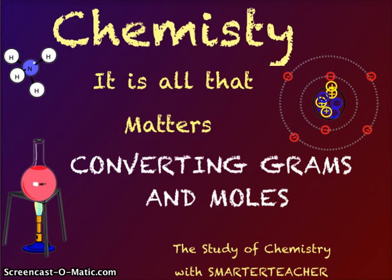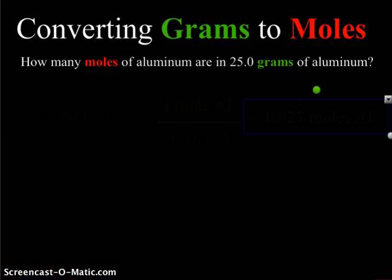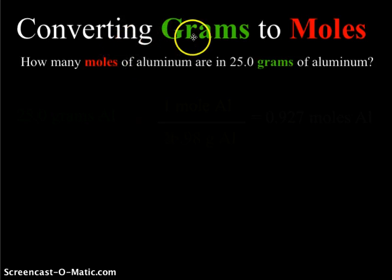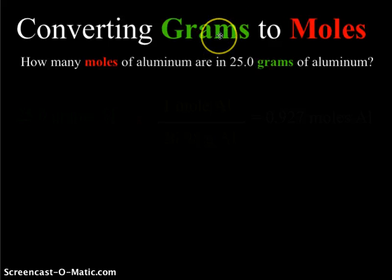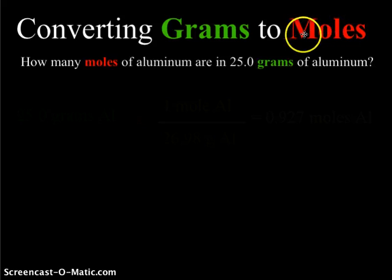Let's look at two examples of this process. First, we are going to look at converting grams to moles. I made grams green because that's going to be our starting point and moles red because that is going to be our ending point. The question is: how many moles of aluminum are there in 25 grams of aluminum?